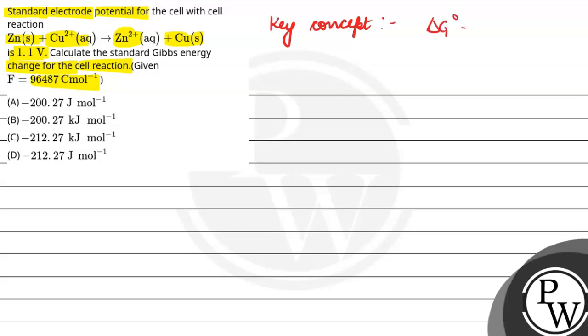That is standard Gibbs energy, delta G⁰, which is equal to minus nFE⁰ cell. Now the question is, E⁰ cell is given, that is 1.1 volt. F value is given, that is 96,487 coulomb per mole.